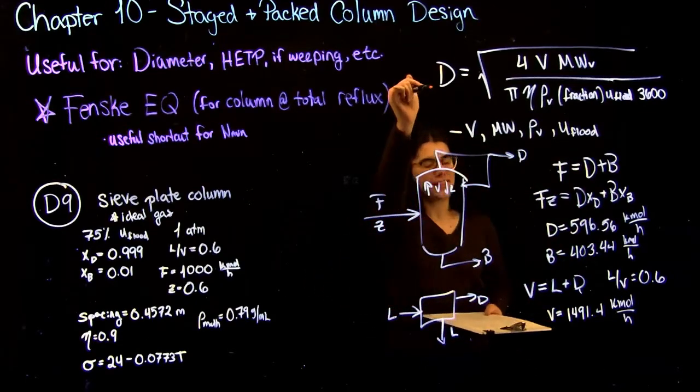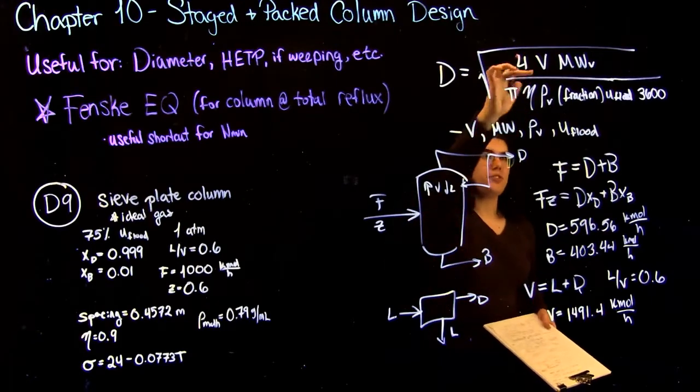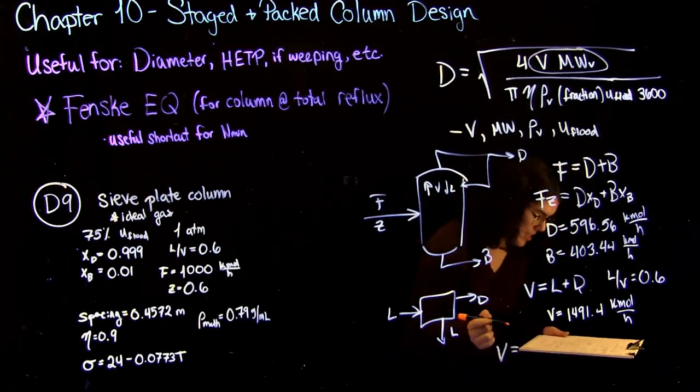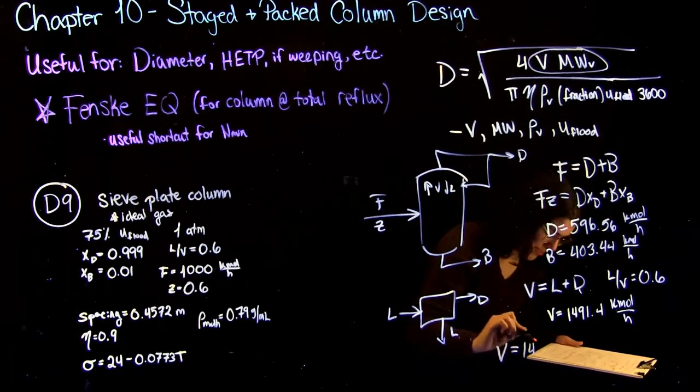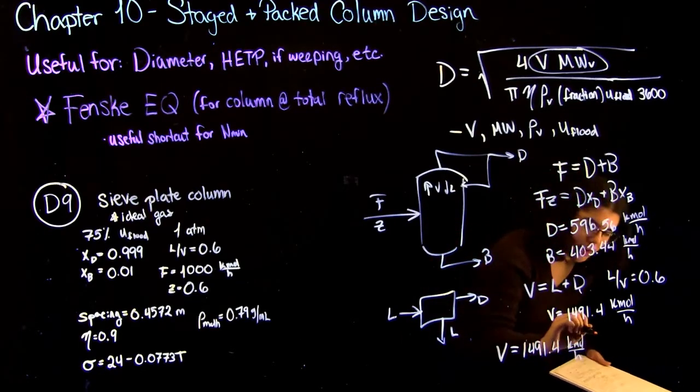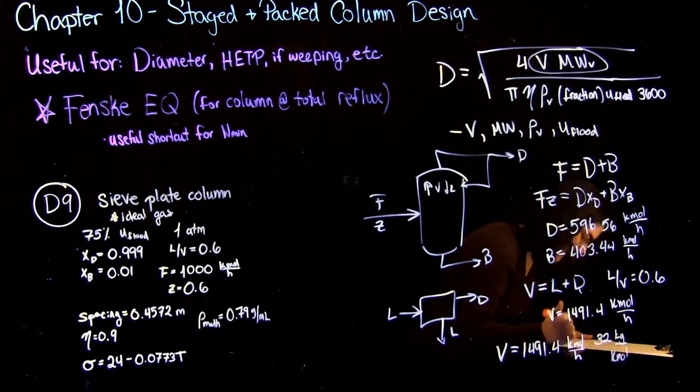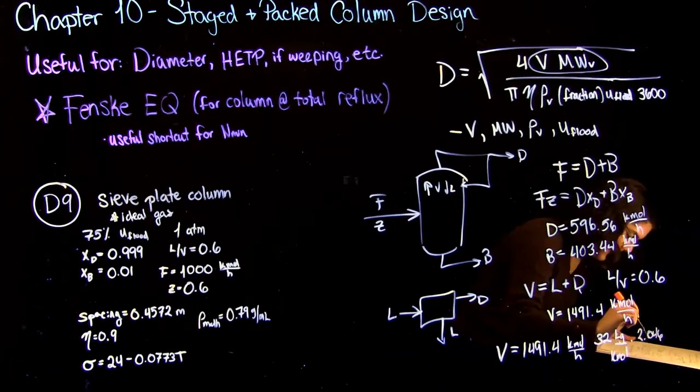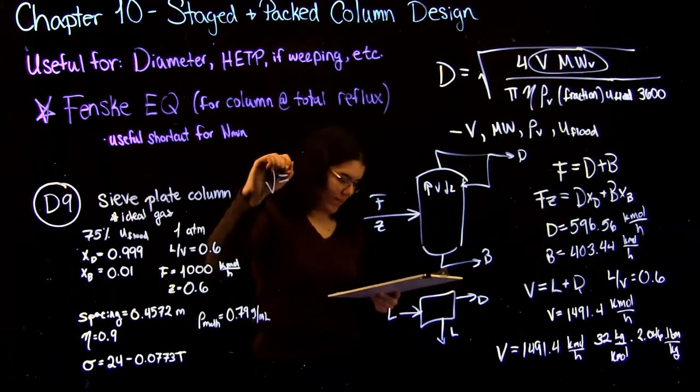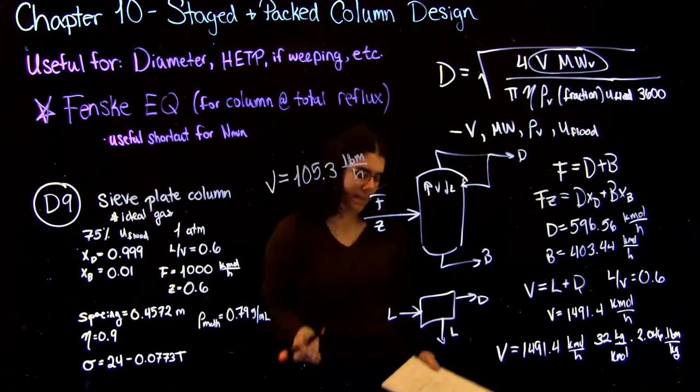So we found V, but like I said before, this equation works in imperial units. So now we're going to have to convert this from kilomoles per hour into something in pounds. So I suggest you do it in pound mass per hour. That way, these two terms just become one. And these conversions, you can just look up on the internet, write down on your formula sheet, or memorize. It's sort of trivial. But I'll show you how to do it anyway. So your V was 1491.4 kilomoles per hour. And then you know the molecular weight of methanol is just 32 kilograms per kmol. And then you can also look up that 2.046 pounds per kilogram. So you'll get a total V equal to 105.3 pound mass per hour.